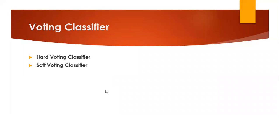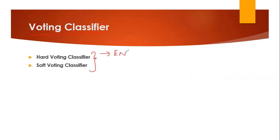Hello all, today we'll be discussing about voting classifier. In voting classifier, we basically have two different techniques, that is called hard voting classifier and soft voting classifier. Many of them have not heard this term about voting classifier, but this is one of the most sub-important topics in every machine learning algorithm. This kind of voting classifier is basically used in ensemble techniques.